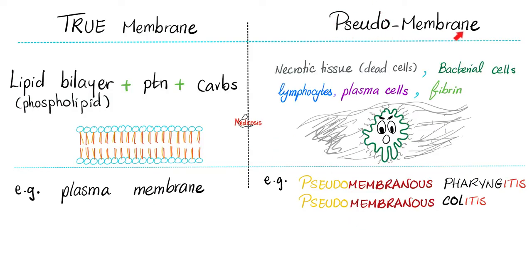Why do we call it a pseudomembrane? What's the difference between a pseudomembrane and a true membrane? A true membrane is the classic lipid bilayer — phospholipid bilayer with some proteins and carbohydrates found in every cell. However, a pseudomembrane does not exist physiologically; it's a pathology, not physiology. It's made of necrotic dead cells, plus bacterial cells, plus inflammatory cells, plus fibrin — forming that grayish, thick, adherent pseudomembrane.